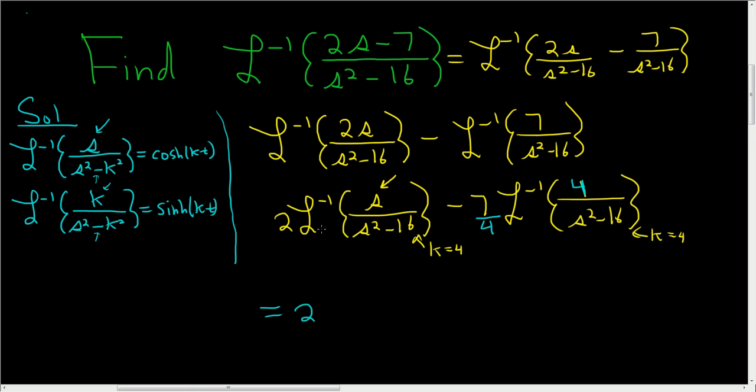So we have the 2. And this whole piece here, this is going to be a hyperbolic cosine. So this will be the cosinch of 4t. And then here we have the 7 fourths. And this will be a hyperbolic sine. So sinch of 4t.